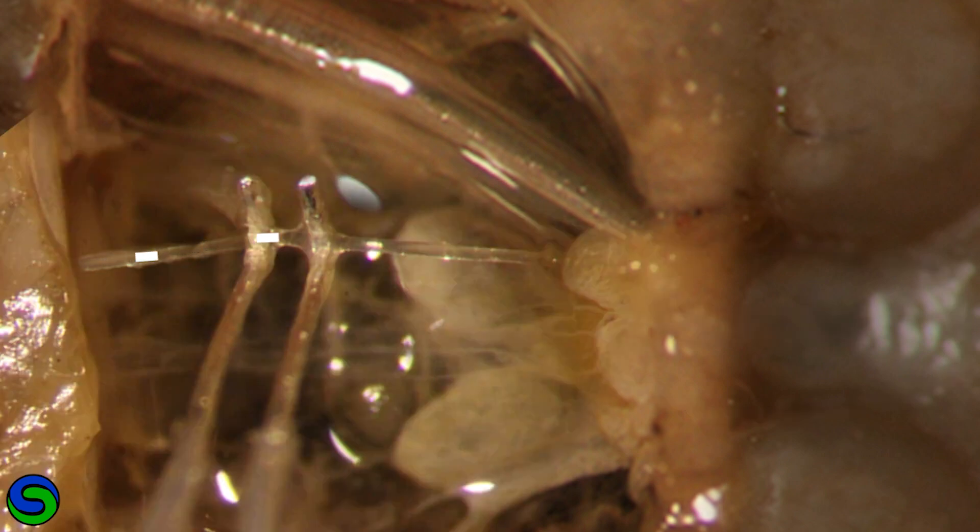A double hook electrode grabs the auditory nerve, measuring a change in the electrical signal from one electrode to the next while a series of sounds was played to the animal.